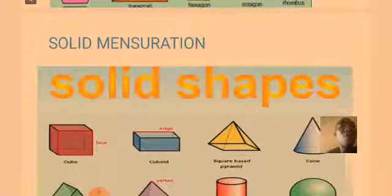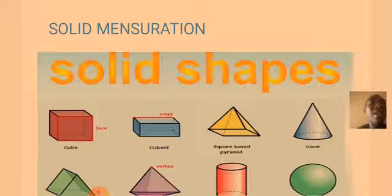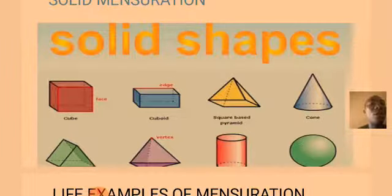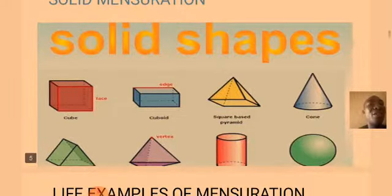The second type of mensuration is what we call solid mensuration. Solid mensuration is also called three-dimensional shape because it deals with three things: the length, the breadth and the height. Examples of solid mensuration include: one, cube; two, cuboid; three, square base pyramid; four, cone; five, rectangular base prism; triangular base pyramid; cylinder and sphere.